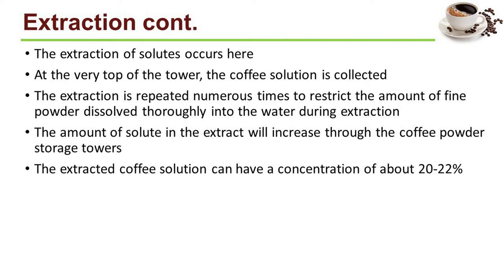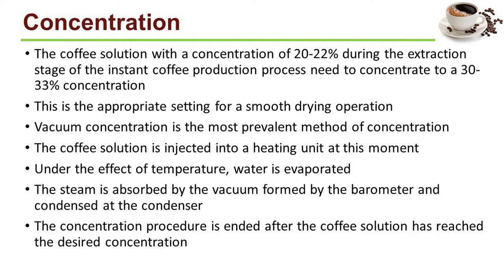The next step is concentration. The coffee solution with a concentration of 20 to 22 percent from the extraction stage needs to be concentrated to 30 to 33 percent concentration, which is the appropriate setting for a smooth drying operation. Vacuum concentration is the most prevalent method. The coffee solution is injected into a heating unit, and under the effect of temperature, water will evaporate. The steam will be absorbed by the vacuum formed by the barometer and condensed at the condenser. The concentration procedure ends after the coffee solution has reached the desired concentration.